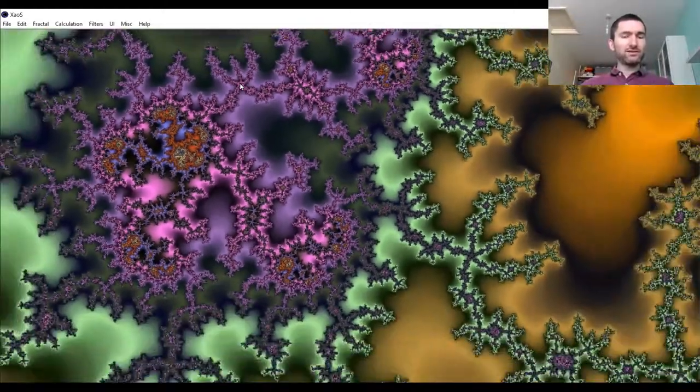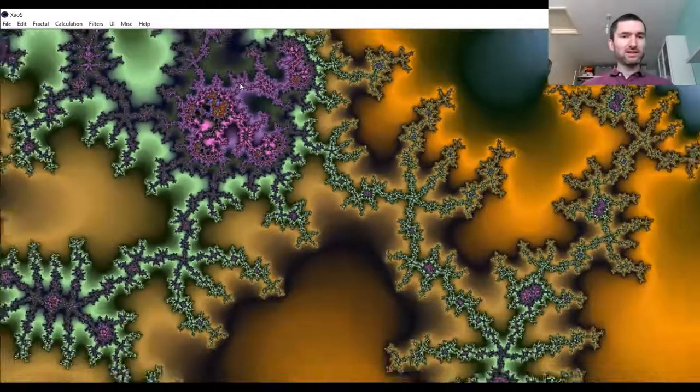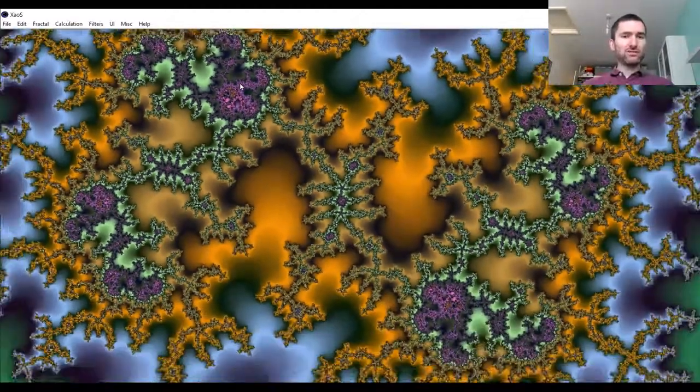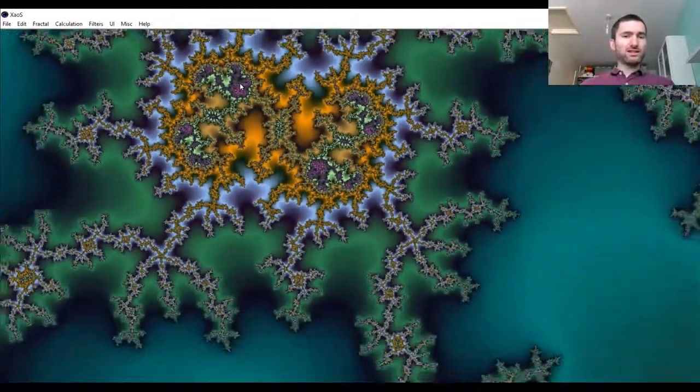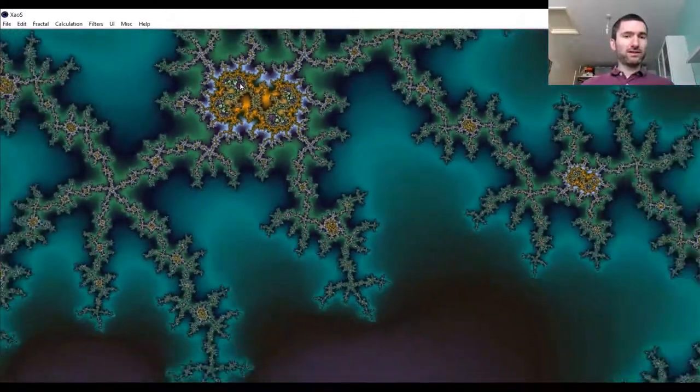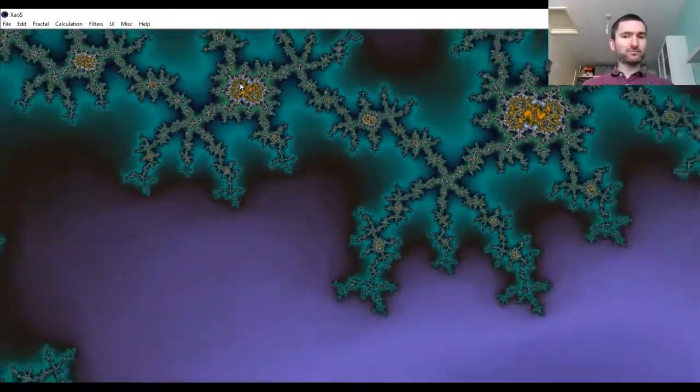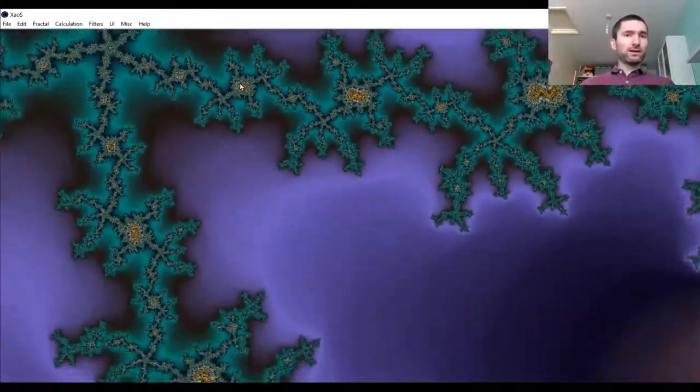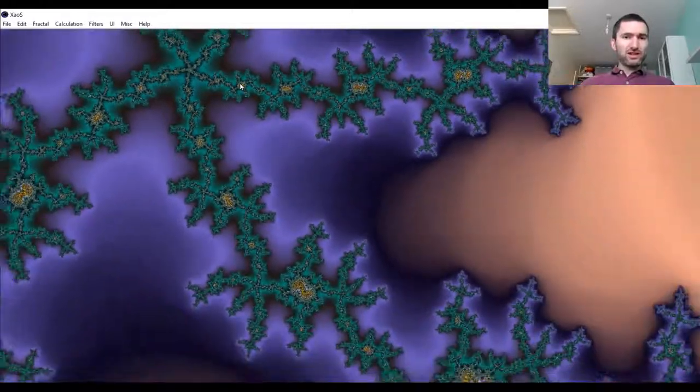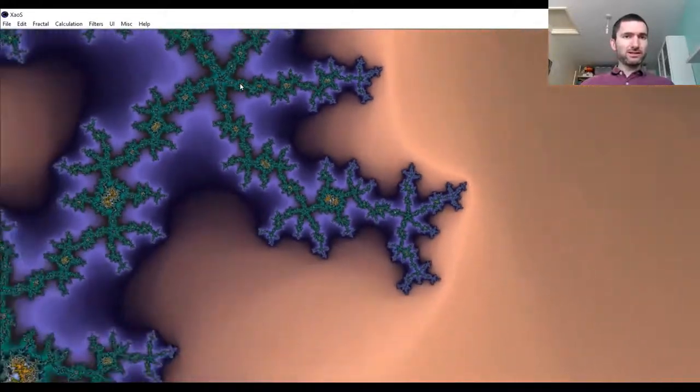So that means we have a sequence that we defined by the rule, which was just simply square the previous term and add this value c, square the term, add c, square the term, add c. It's just the values c for which that sequence doesn't blow up. The ones, the points that are stable.